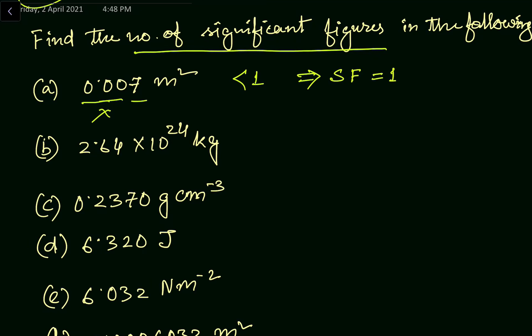In the second part, if we have a value times 10 to the power of something, that power-of-ten part is not significant. Here we can see we have three non-zero digits. Whenever we have non-zero digits in any measurement, they are all significant. This value is greater than one and has three non-zero digits, so significant figures equals three.